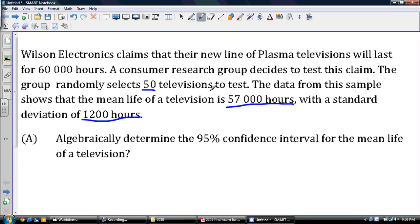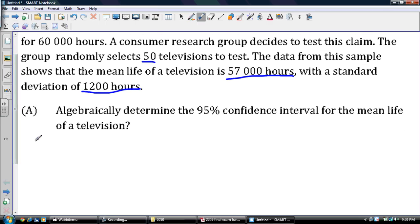So we've got a few numbers here. We have 50 televisions, that's my sample size, so N equals 50. Then we have my mean, or my x-bar, that is equal to 57,000. Actually that should be x-bar because mu is for a population, we're just going to use x-bar for a sample. And then my standard deviation, sx, is equal to 1,200 hours.